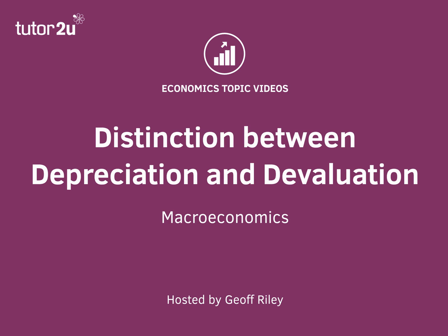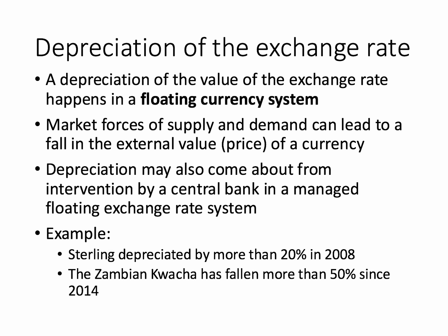Here's a short topic video looking at the distinction between a depreciation of the exchange rate and the devaluation of a currency. A depreciation of a currency happens inside a floating or managed floating system. For example, the market forces of currency supply and demand could lead to a fall in the external value of a currency. Depreciation might also come about if the central bank changes interest rates or intervenes directly in the currency markets to bring about a lower value of the currency.